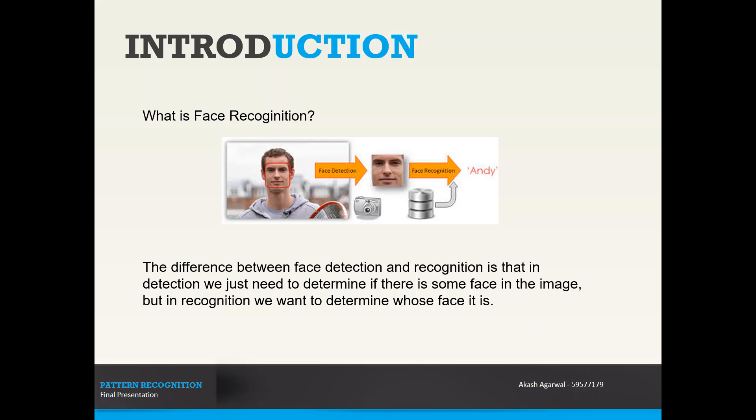Face recognition, on the other hand, is the matching of that identified face with our database and finding who that picture or the face belongs to. As you can see in this image, the face detection identifies the face of Andy Murray, the tennis player, in the bigger picture and then recognizes or identifies the name of the person by comparing from our trained database.